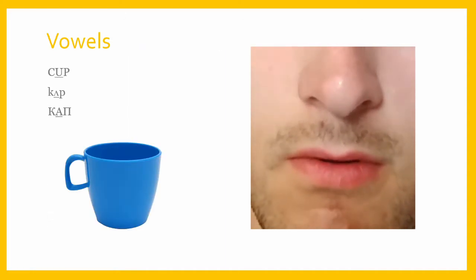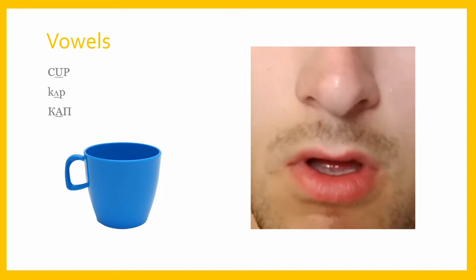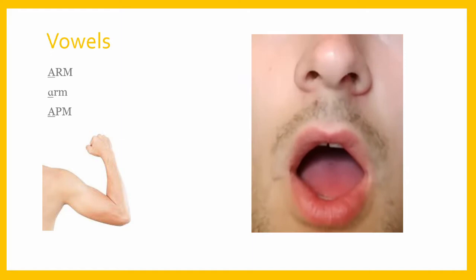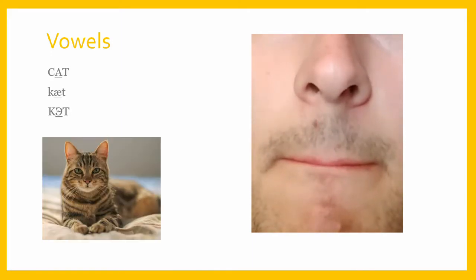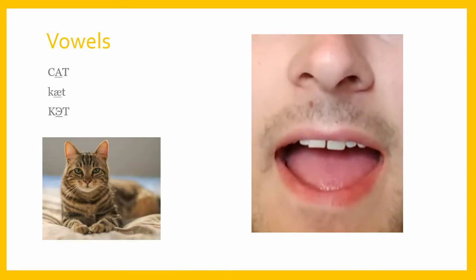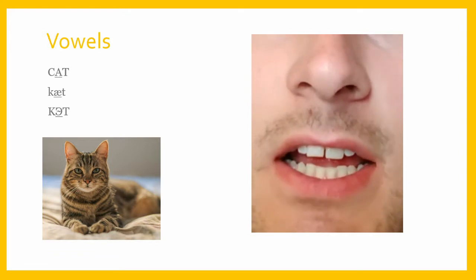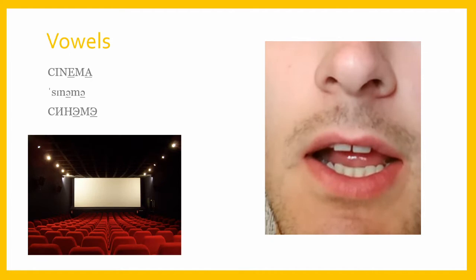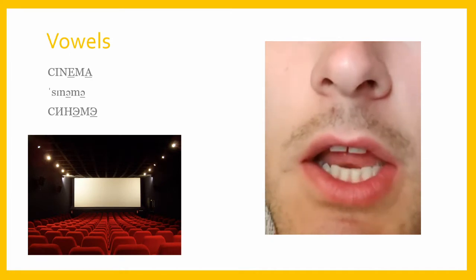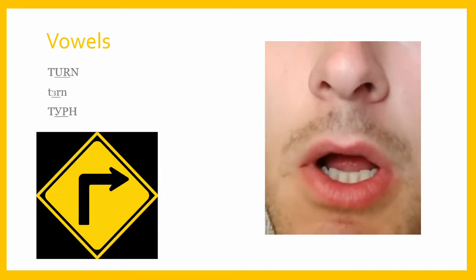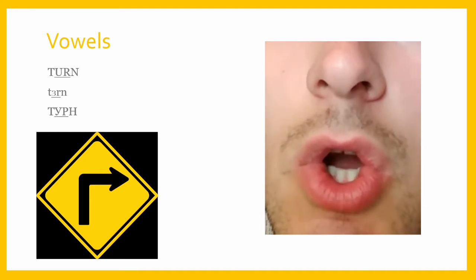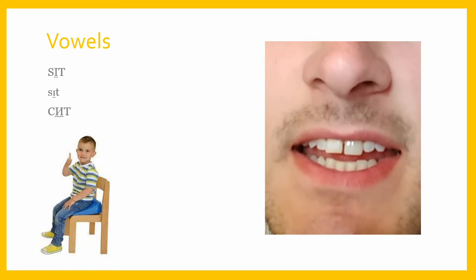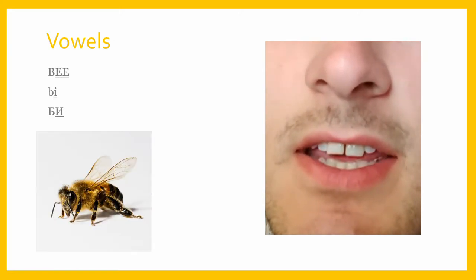Vowels. A — cup. A — arm. A — cat. A — bed. A — cinema. Ur — turn. I — sit.